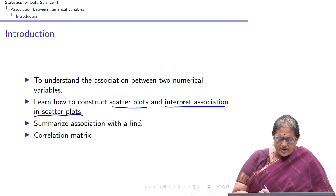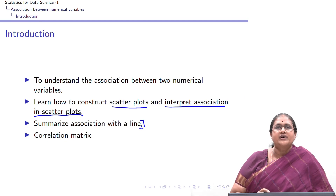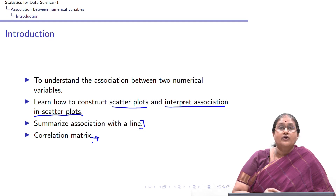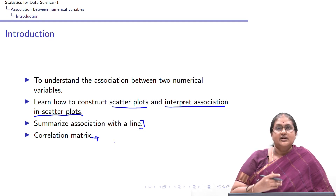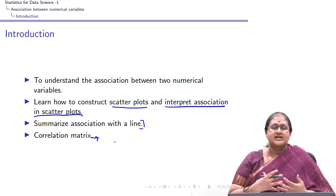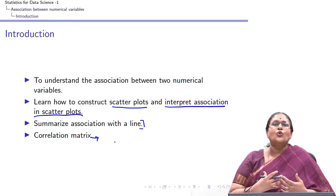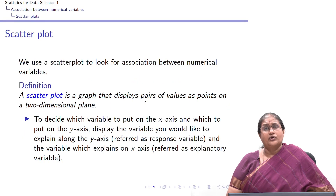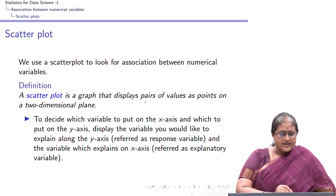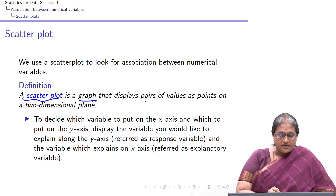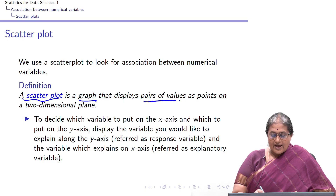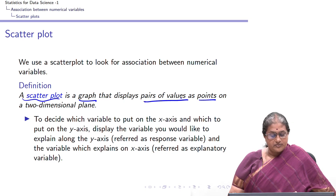Further, we will briefly introduce how we summarize this association through the concept of a line, and then we will also introduce the notion of a correlation matrix so that this concept can be extended to understand association between more than two variables. So, what is the scatter plot? A scatter plot is defined as a graph that displays pairs of values as points on a two-dimensional plane.